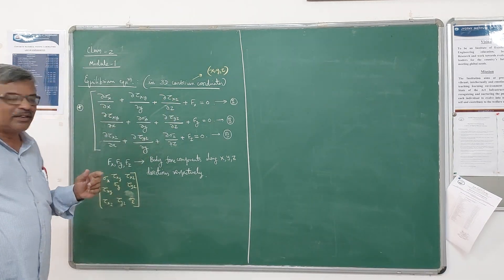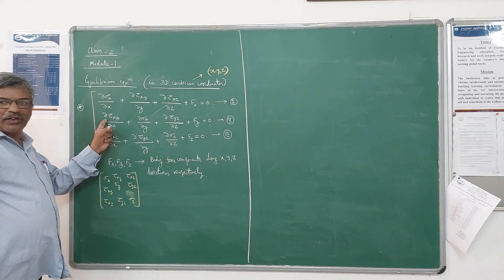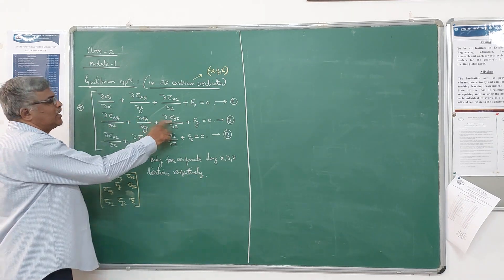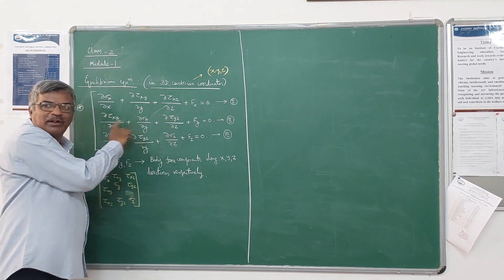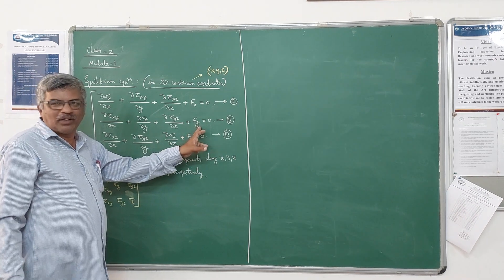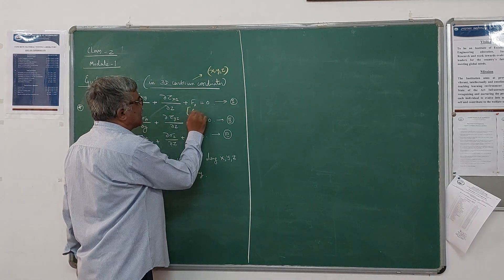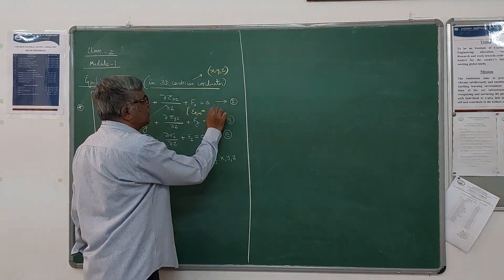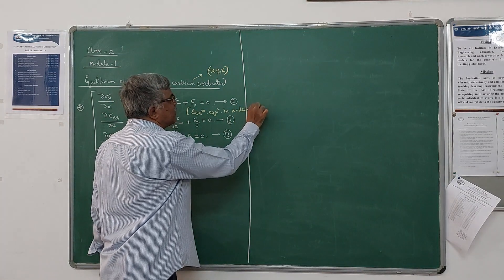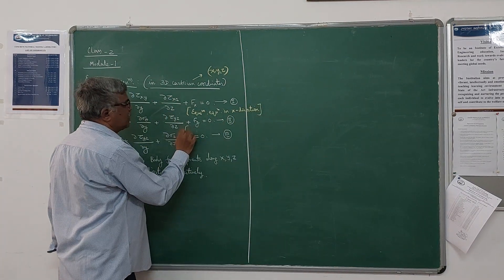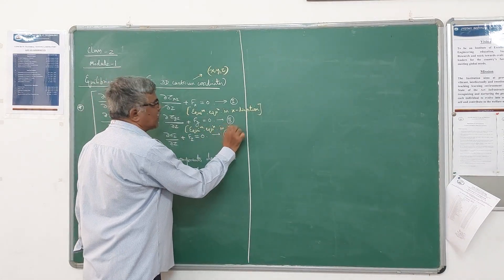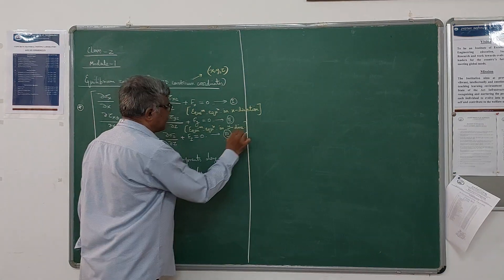The second one is tau XY, sigma Y, tau YZ — these are the components in the denominator, with XYZ present. This represents F_y, and this is the equilibrium equation in the X direction. The second one is the equilibrium equation in the Y direction, and the third one is the equilibrium equation in the Z direction.